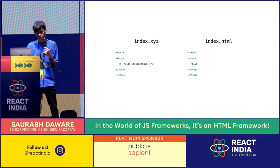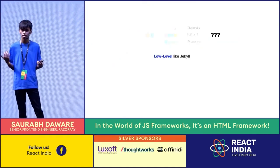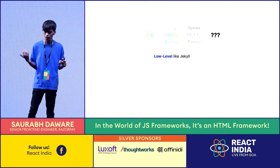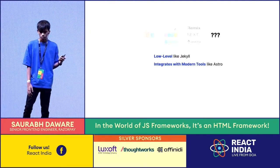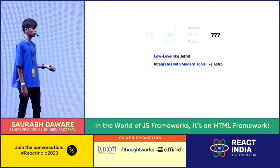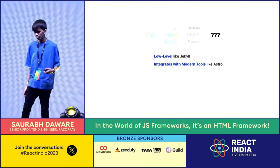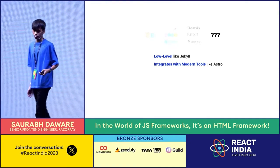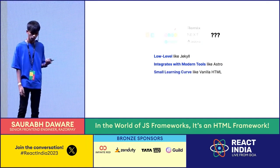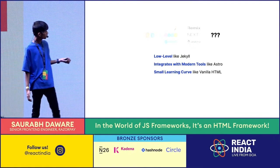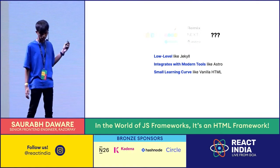There's a fundamental problem with this, because if I want to do something where it goes to HTML, that has a smaller learning curve and has the flexibility of HTML, then something that integrates with modern tools like Astro does — so you can use MDX, Markdown, TypeScript, any of the tools that you would probably want to use in your ecosystem. And it has a smaller learning curve, like Vanilla HTML. And this is the interesting part that I'm going to talk about eventually.